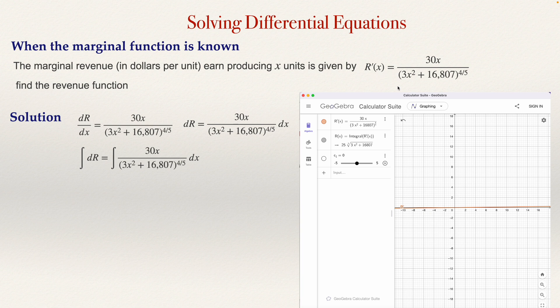I type the marginal revenue first, the function that they give me, and then after that I compute the revenue just making the integral of the function that I was given. So when I do that and I type integral and press enter, this is the answer that GeoGebra gave me: 25 times the fifth root of (3x² + 16,807).